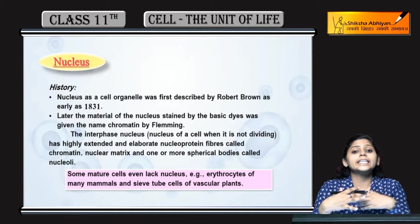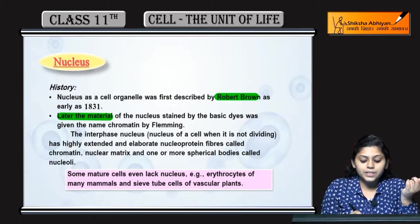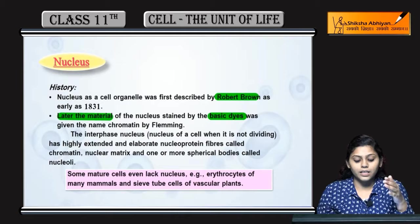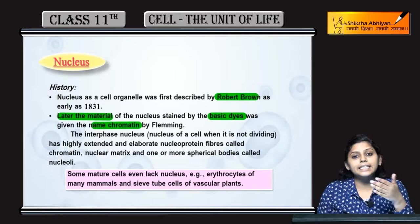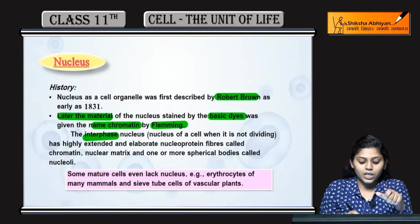Next topic is nucleus. Nucleus ki history hamne pehle hi deki — kis ne discover kiya tha? Robert Brown ne discover kiya tha. Later, the material of nucleus ko basic dye ke saath stain kiya. Aur dekha kuch ek structure jo mil raha hai, usse naam diya chromatin — Fleming ne.